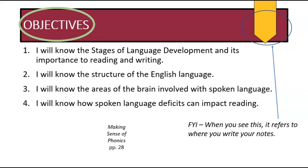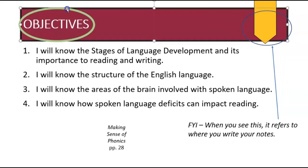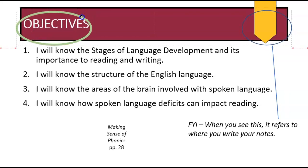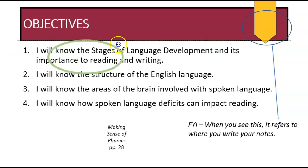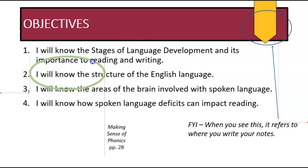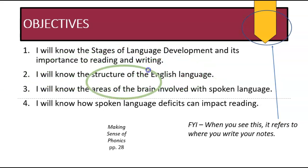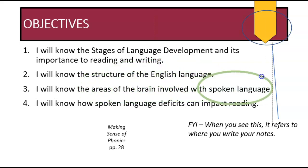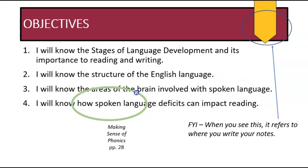Here we have the objectives. We're going to be learning about the stages of language development and also why that language development is important to reading and writing. We're going to know the structure of the English language, the areas of the brain involved in spoken language, and how, if there are deficits, that can impact reading.